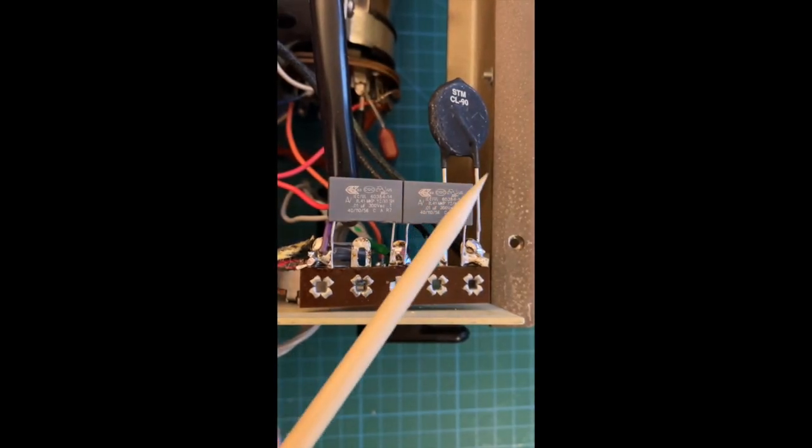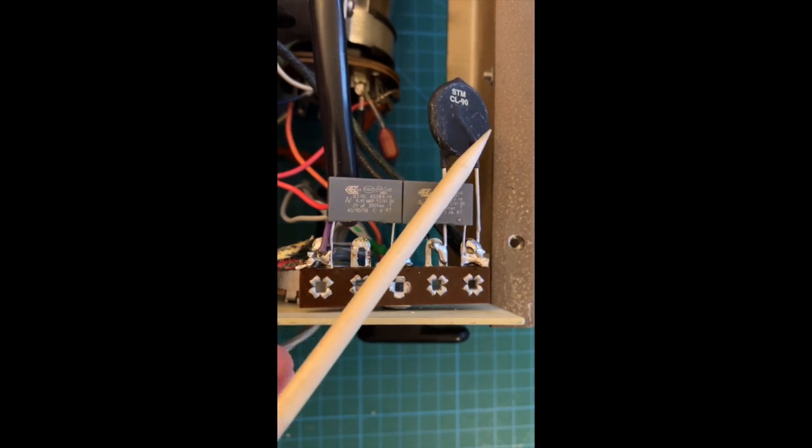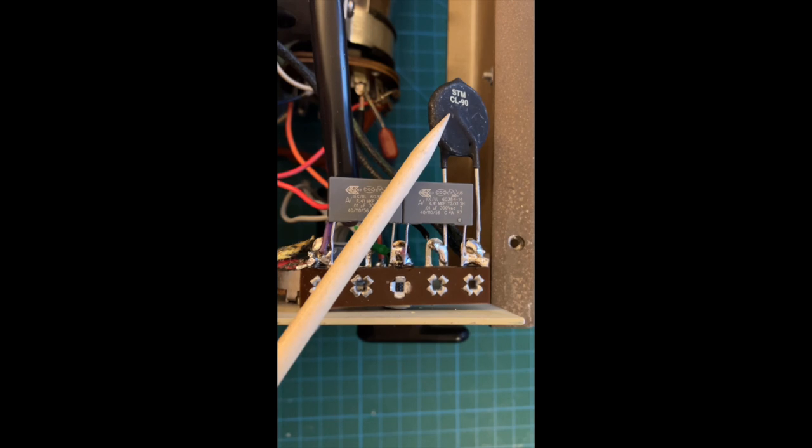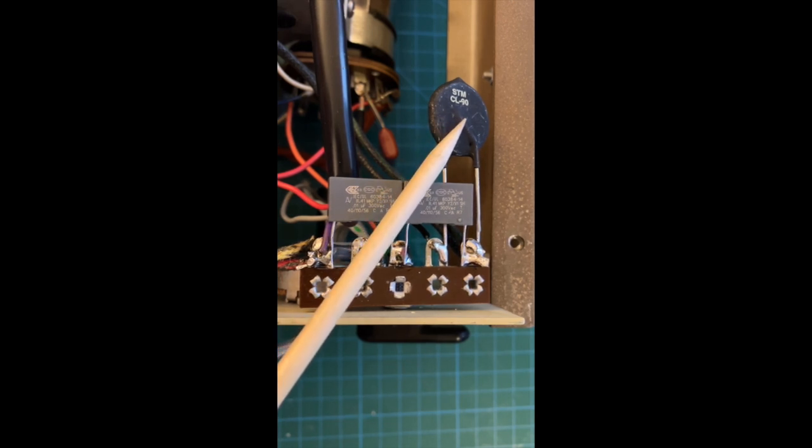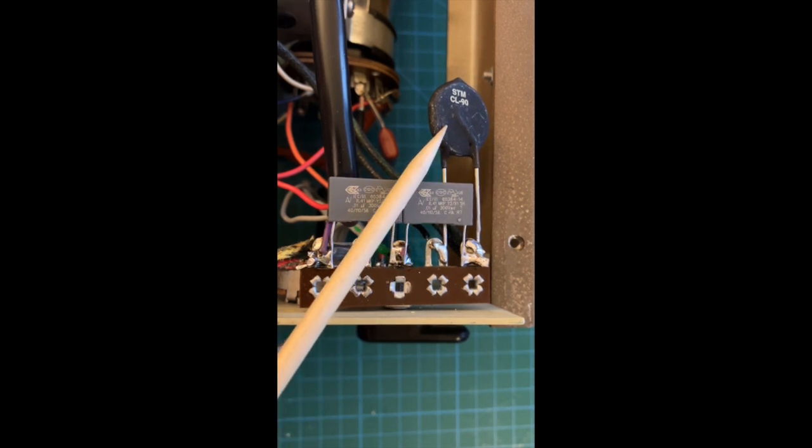Are there any downsides to putting a CL90 or other NTC inrush protection onto a piece of equipment of any kind, tube or otherwise? Keep in mind that this is wired in right now immediately after the hot side coming in, the fuse, and the on-off switch. Then that goes into and through this CL90, and then onto the rest of the equipment, namely the primary of the main power transformer.